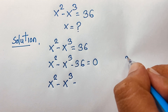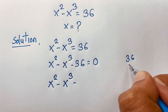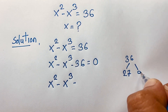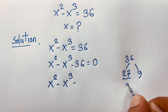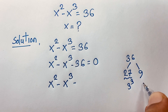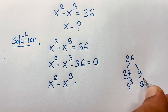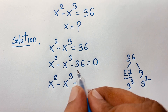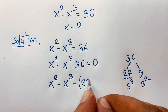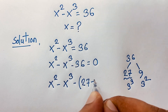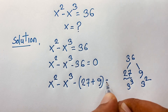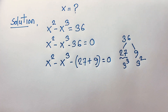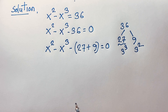Now, 36 can be written as 27 plus 9. You can see that 27 is 3³ and 9 is 3². So 36 equals 27 plus 9, and we substitute this in: x² minus x³ minus 27 minus 9 is equal to 0.